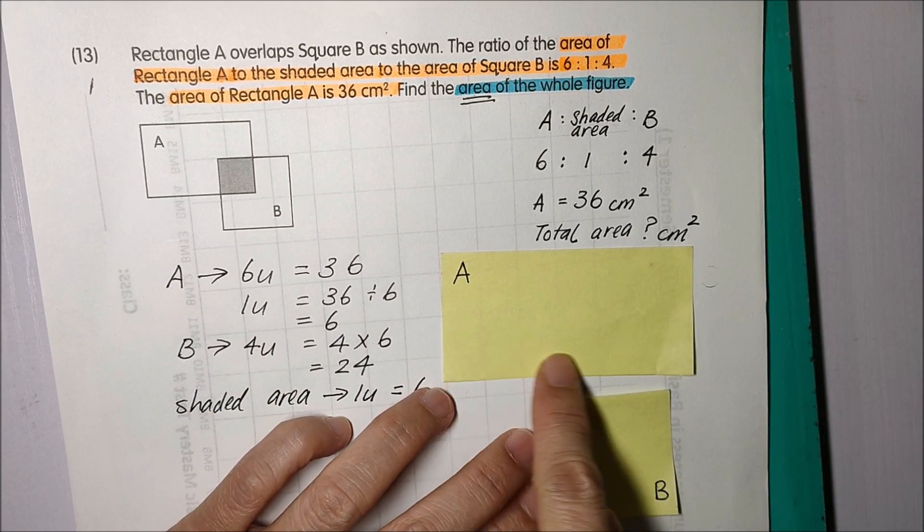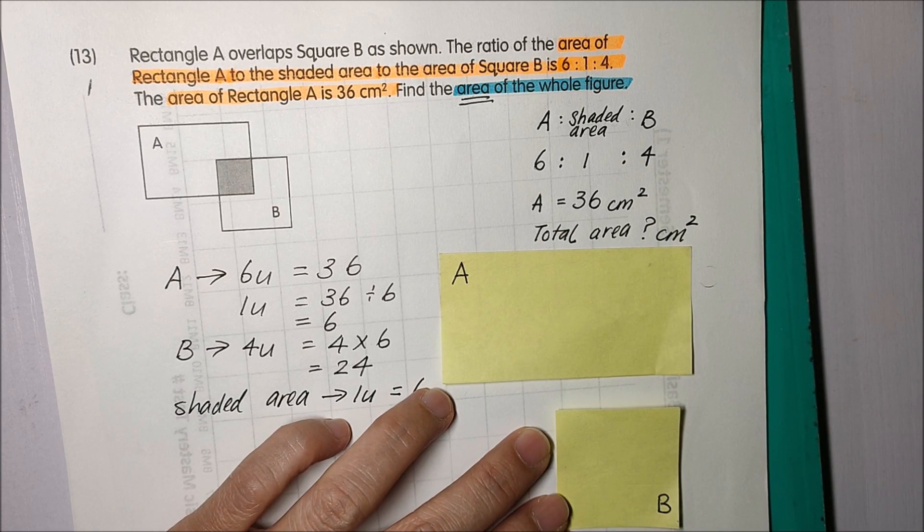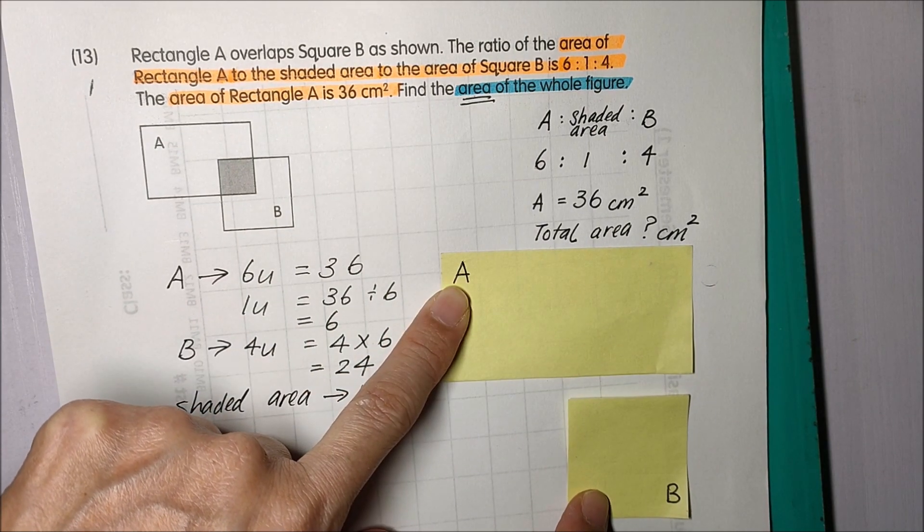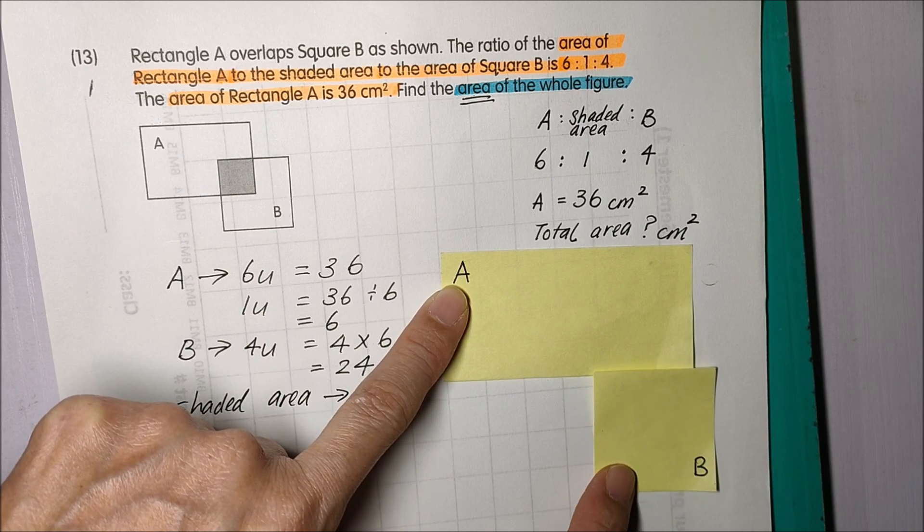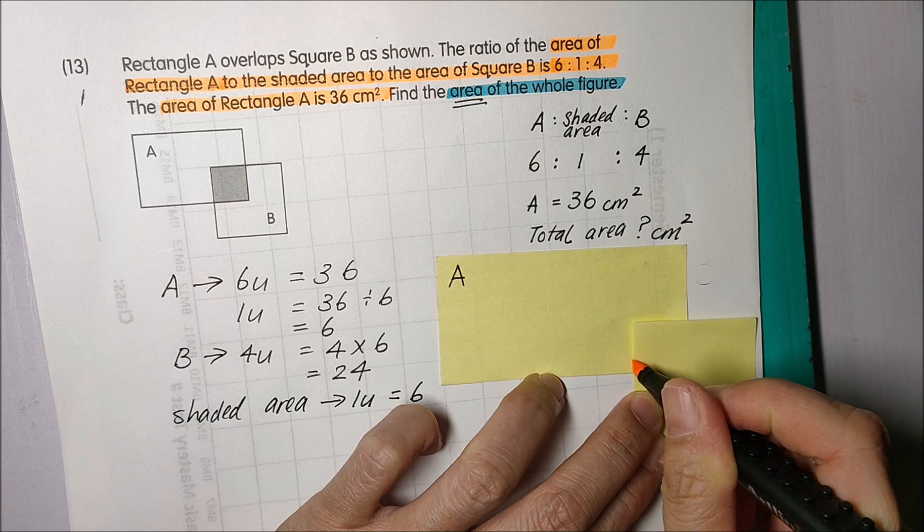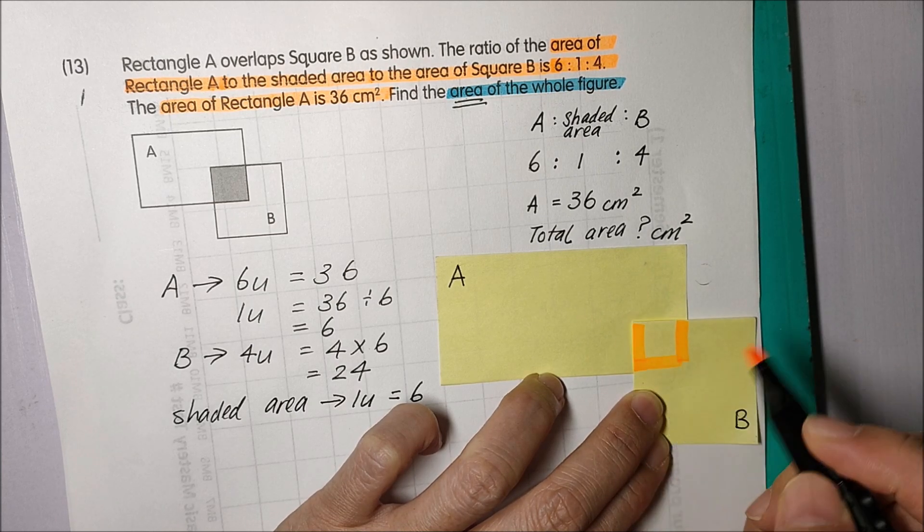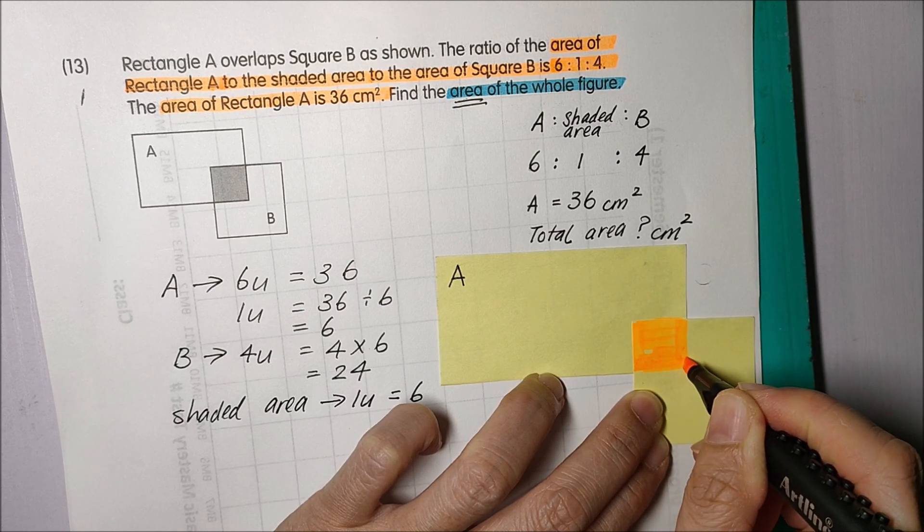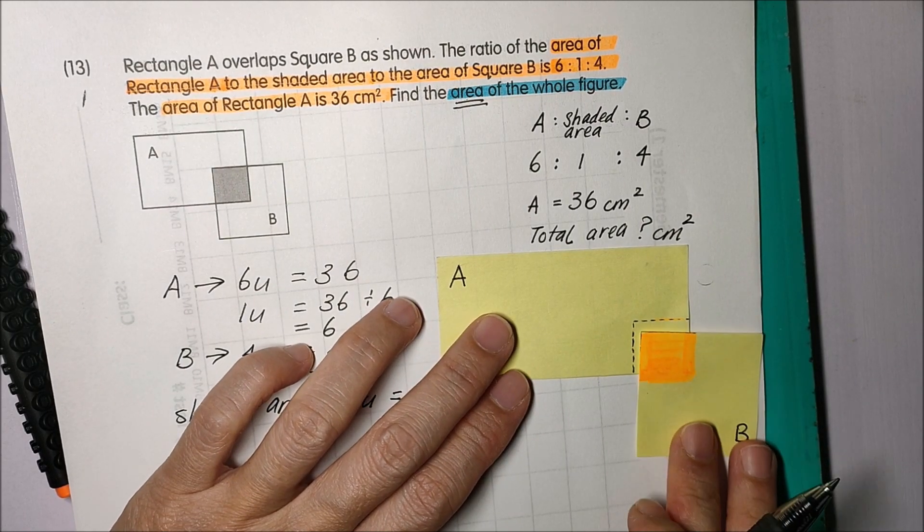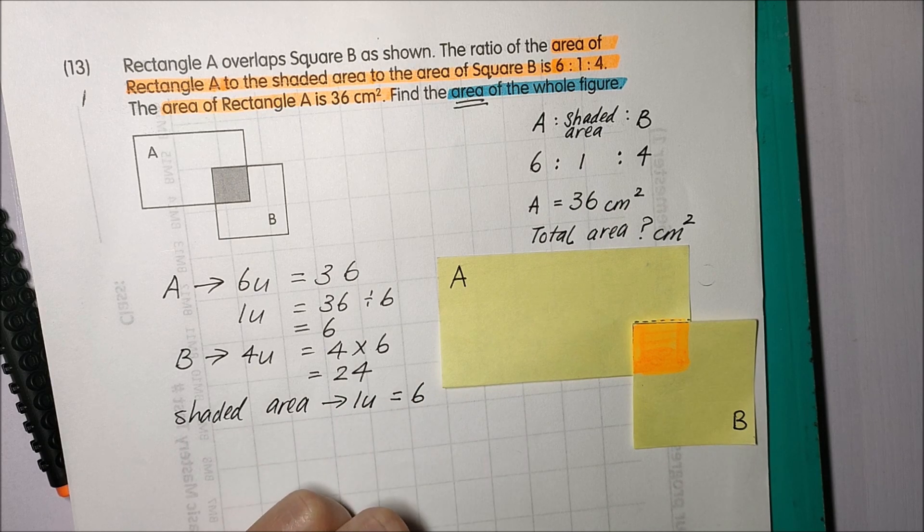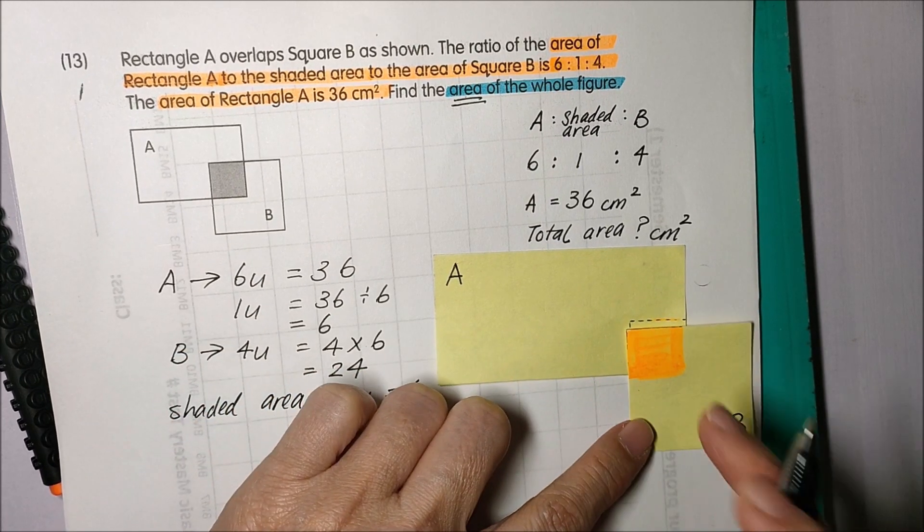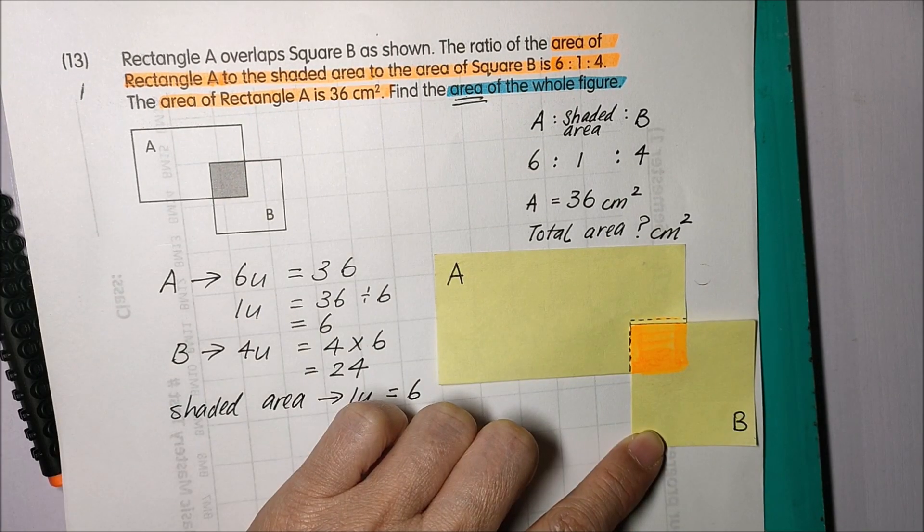So I have found the area of A and the area of B, but they overlap each other. So I cannot add A and B together because that is not the total area of my figure. There's an overlapping. If I add A and B together, what happens is I'm actually adding this shaded part 2 times. Can you see that? So what I need to do is I need to find the area A and area B, add them together, and take away this shaded part.